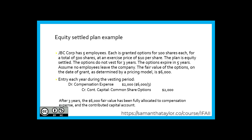An example of an equity settled plan. JVC Corp has five employees; each is granted options for 100 shares, for a total of 500 shares, at an exercise price of $10 per share. The plan is equity settled. The options do not vest for three years and expire in five years. Let's assume no employees are leaving the company. The fair value of the options on the date of grant, as determined by a pricing model, is $6,000.